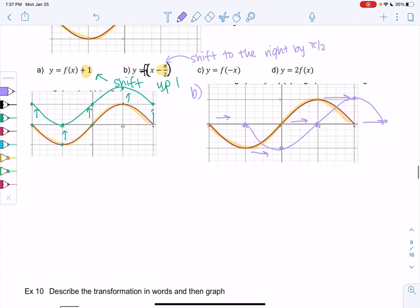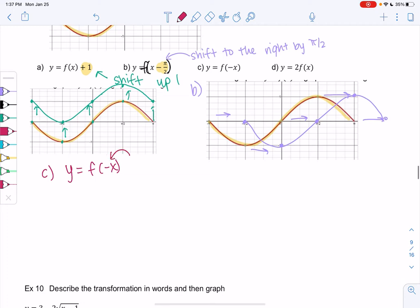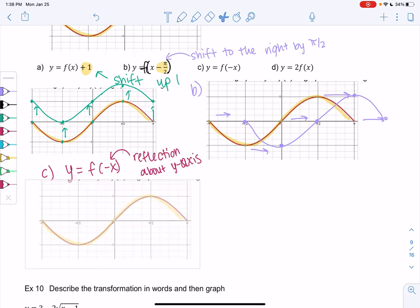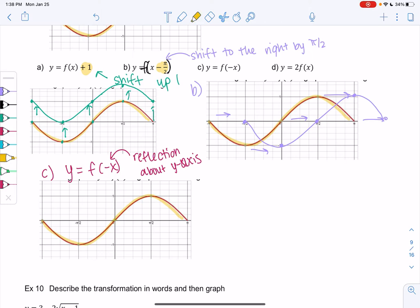All right, so c, we have y equals f(negative x). So that's a reflection. It'll be a reflection about the y-axis. The inner negative is the y-axis, basically like sideways. So this piece on the right side will now be on the left side. We're reflecting about the y-axis. And then this bottom piece on the left is now on the right, because again, we're reflecting about the y-axis. And we get the same curve, but reflected.